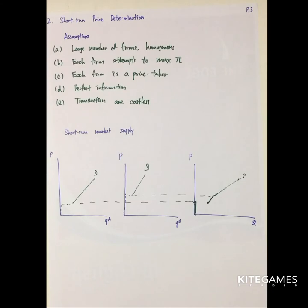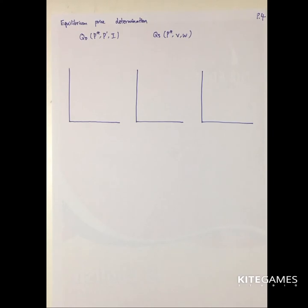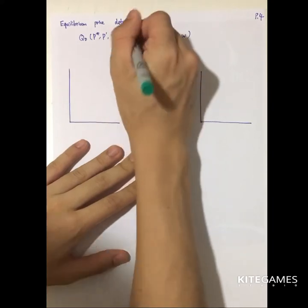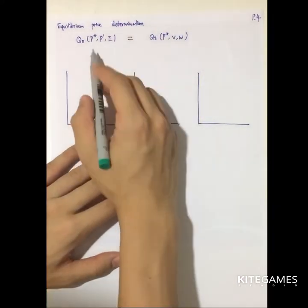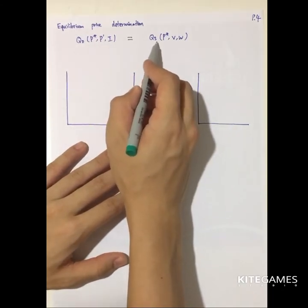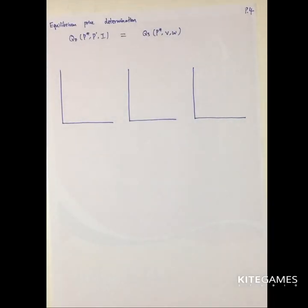So how is price determined? The equilibrium price is generated by setting Qd equal to Qs at the optimal price. Demand is a function of own price, cross price, and income, while supply Qs is a function of price, V and W (capital inputs). If Qd equals Qs, the equilibrium price can be determined.